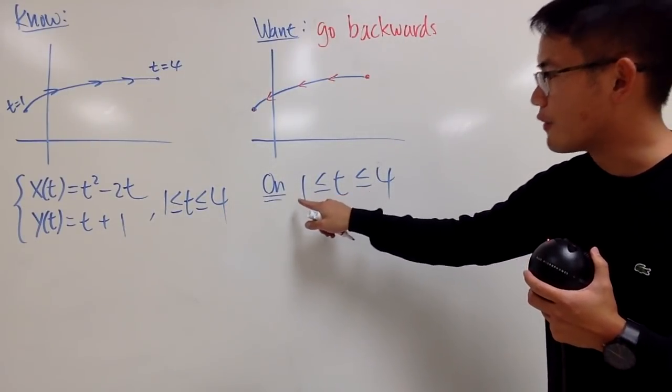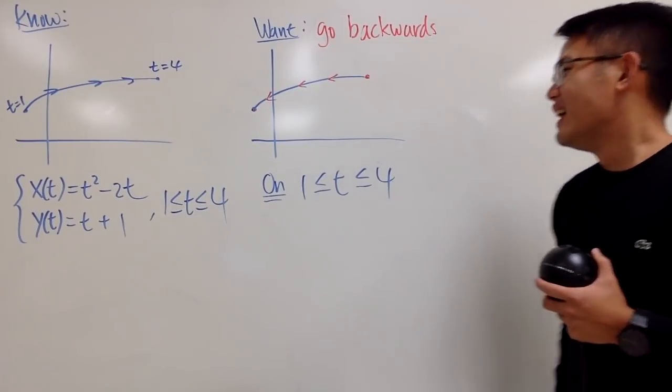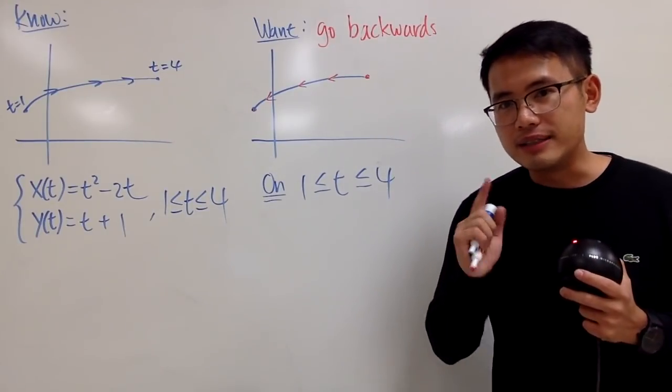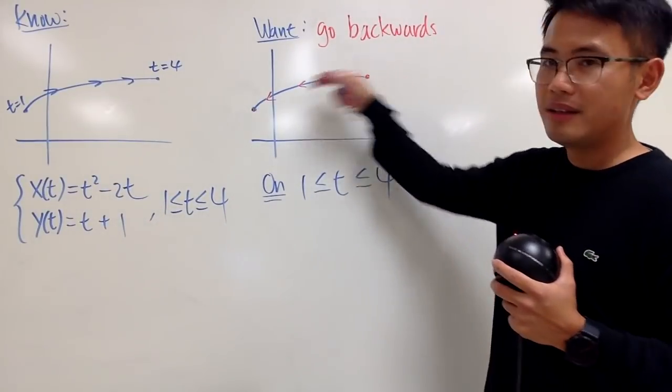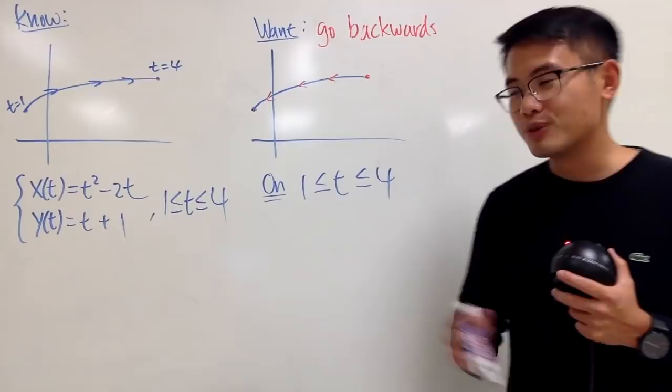So we'll keep it like this. I want to go from t is from 1 to 4. All right, so you guys should pause the video and think about how you can modify the equations so that you can make this travel backwards. So try it first.